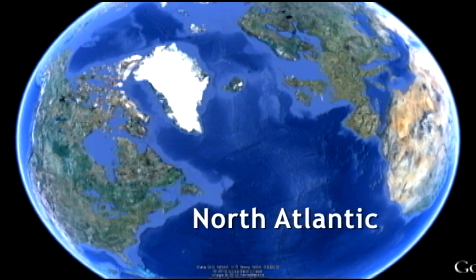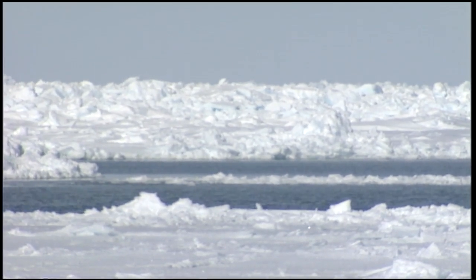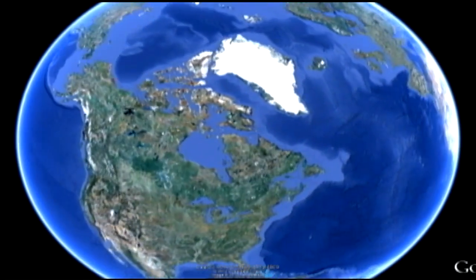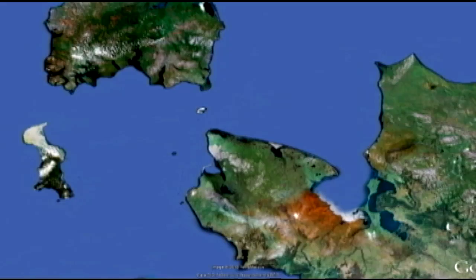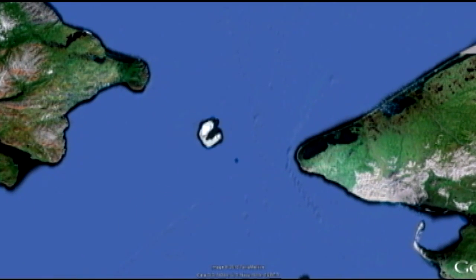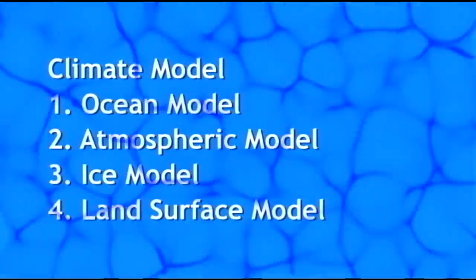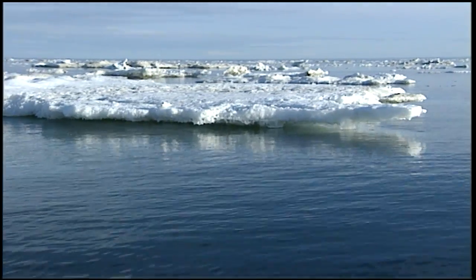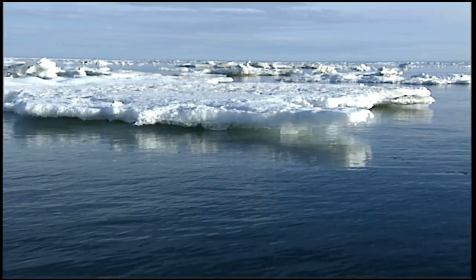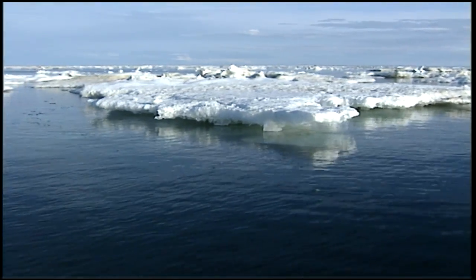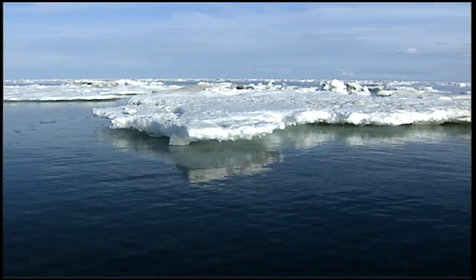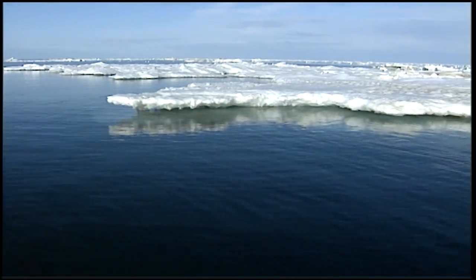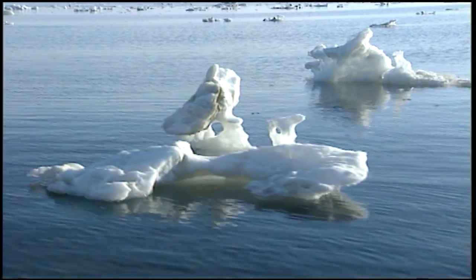The North Atlantic is where the global ocean circulation is primarily modulated from. That flow can be slowed down with the export of fresh water from the Arctic, a large portion of which originally came from Bering Strait. The climate model itself consists of an ocean model, an atmospheric model, an ice model, and a land surface model. There's a strong connection between the world's ocean currents and what comes through Bering Strait — that's one of the controls on climate that Bering Strait offers for global weather.